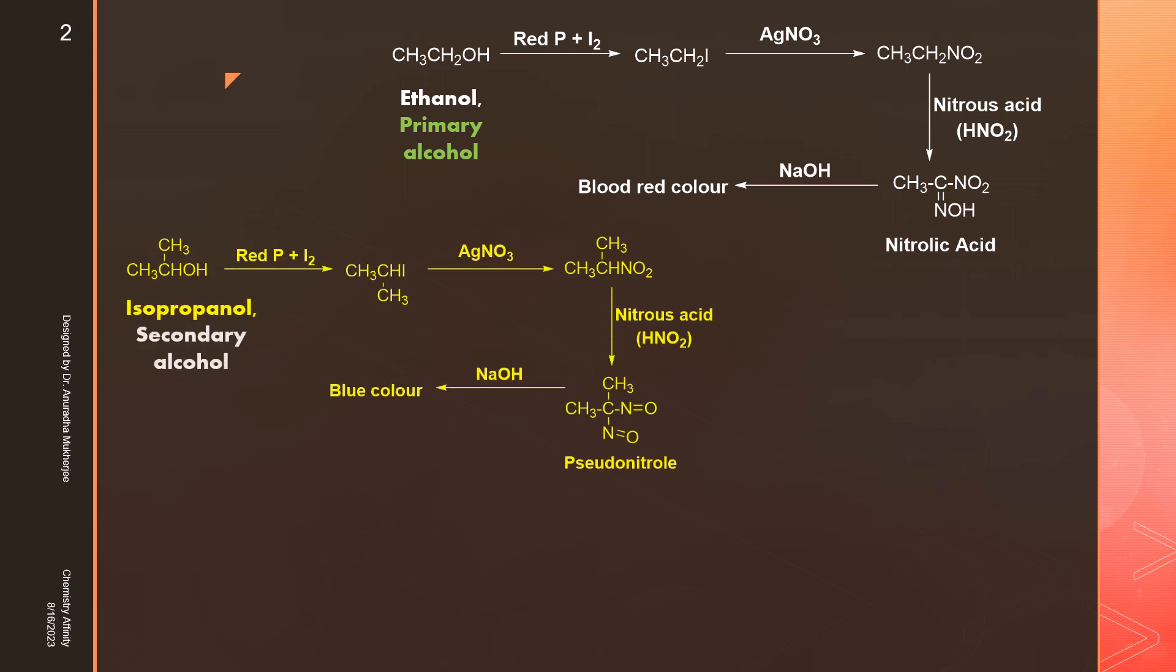Secondary alcohol isopropanol when it reacts with red phosphorus iodine converts to alkyl iodide. Alkyl iodide reacts with silver nitrate to give nitroalkane. In presence of nitrous acid we get a different compound which is called pseudonitrol. In presence of sodium hydroxide, pseudonitrol gives blue color.